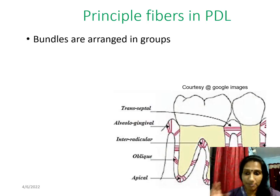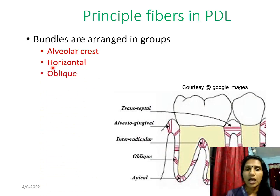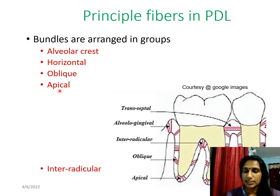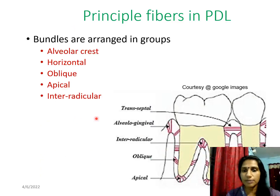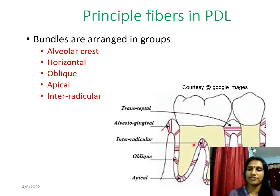The principal fibers are arranged in bundles in different sets. There are five major groups among the principal fibers: alveolar crest fibers, horizontal fibers, oblique fibers, apical fibers, and interradicular fibers. Looking at the picture, you can see the alveolar crest fibers in the alveolar crest region, followed by horizontal, oblique, apical, and interradicular fibers.